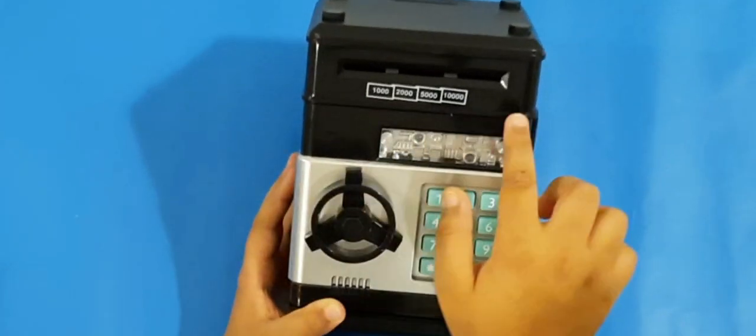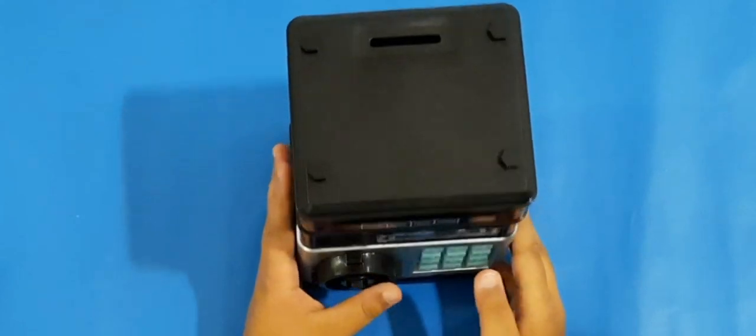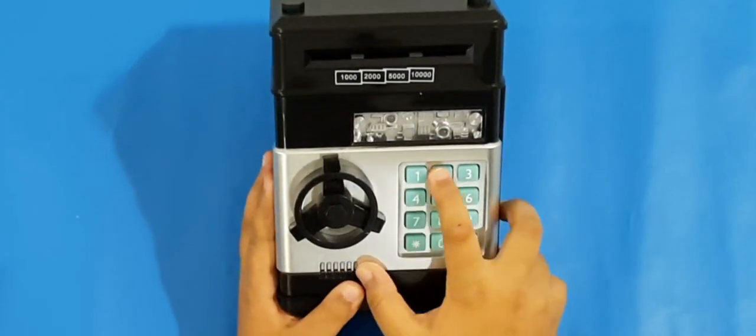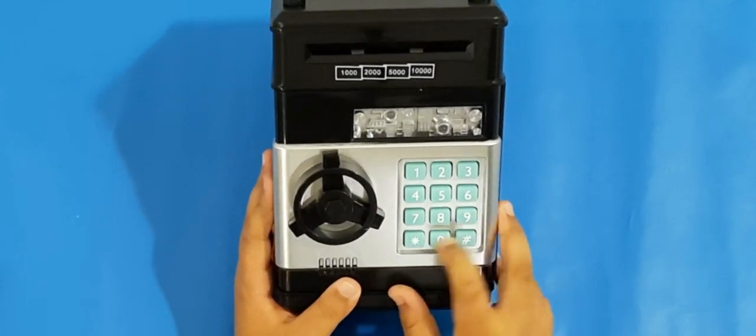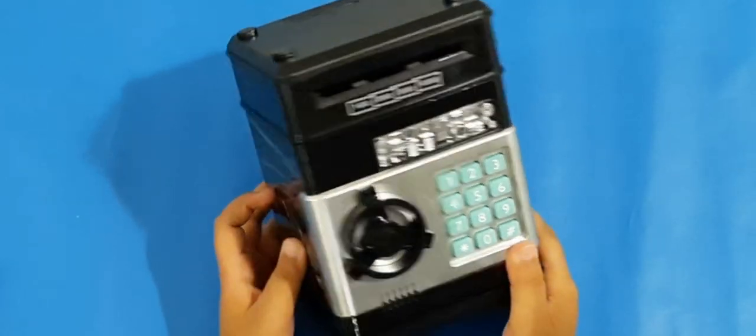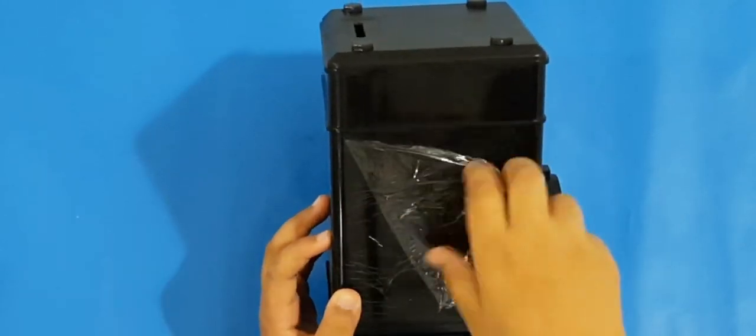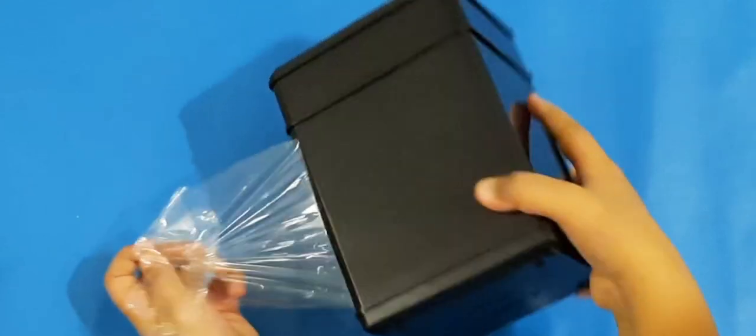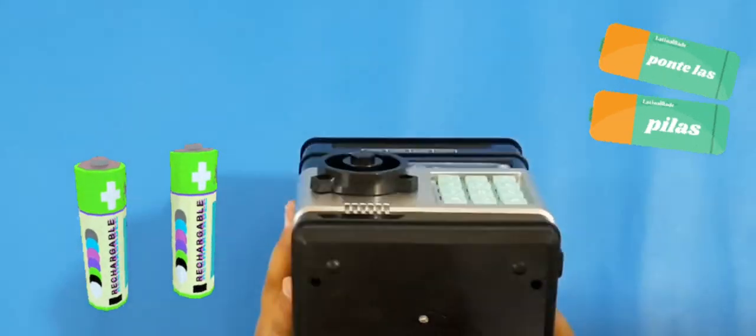Here we insert the bins and here we insert the coins. This is its speed dial where we can enter the password and spin the wheel to open the safe. Now let's insert the batteries.